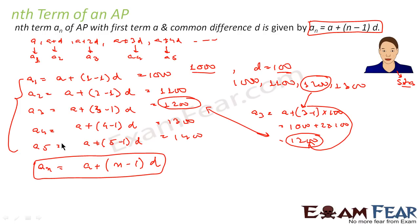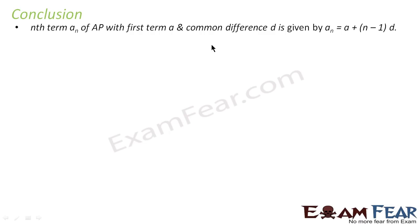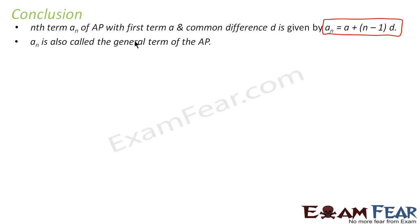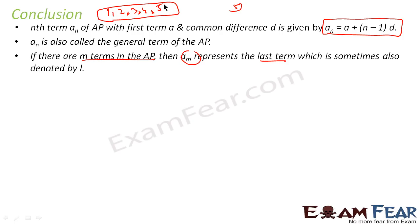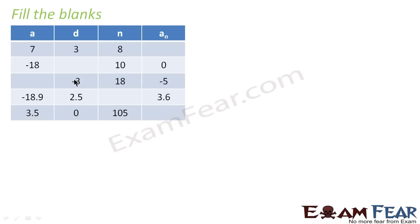Let's remember this formula — it's a very crucial formula. For any AP term, a_n = a + (n-1)d, where a is the first term, n is the term number, and d is the common difference. a_n is also called the general term of the AP. If there are m terms in the AP, then a_m represents the last term.